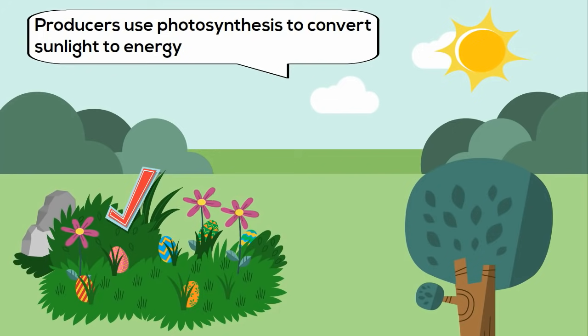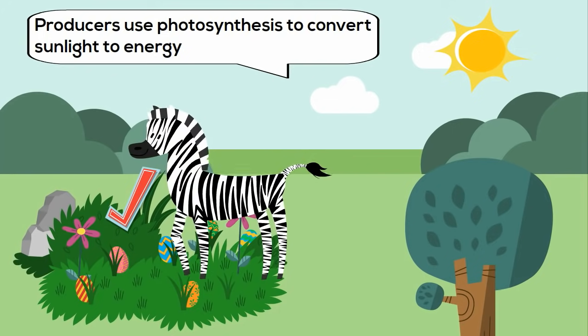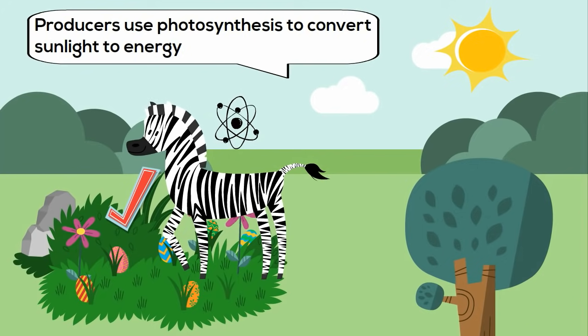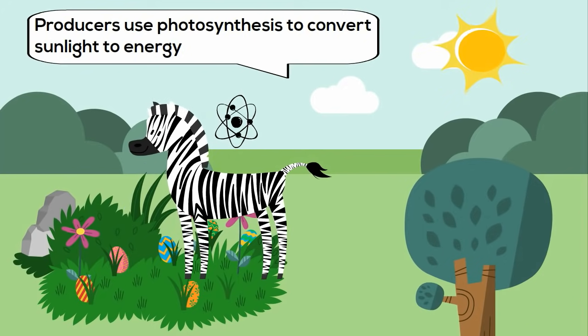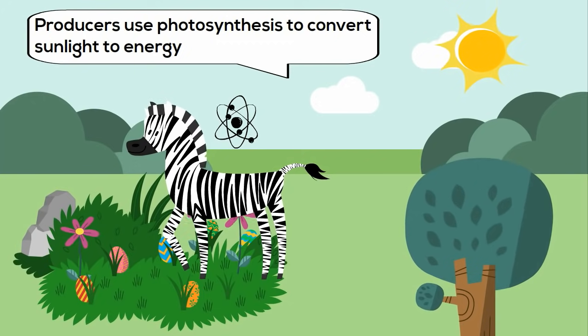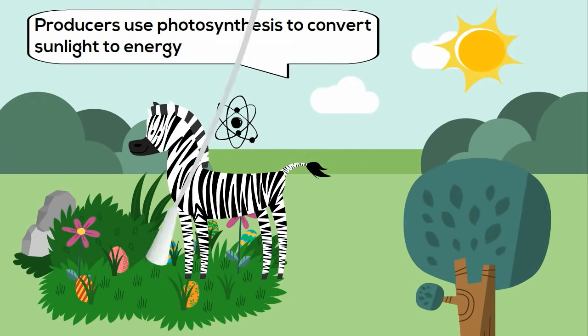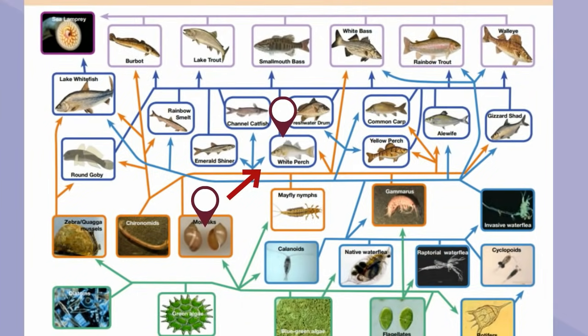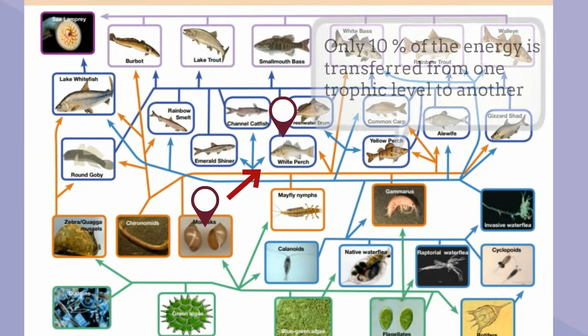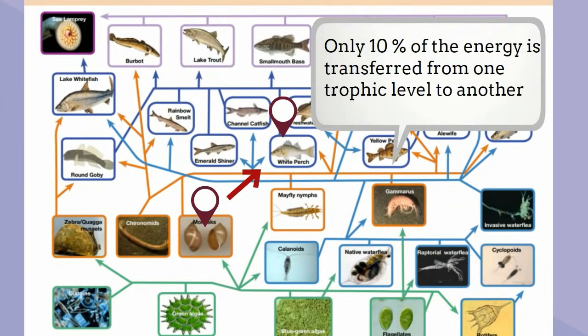As consumers eat these producers, carbon bonds are broken and energy is released, and this energy is transferred from one level to another. However, as you move from one trophic level to another, you lose 90% of this energy.